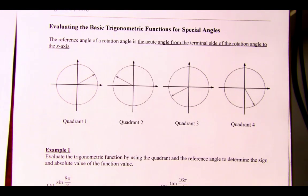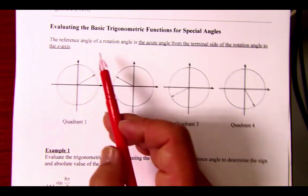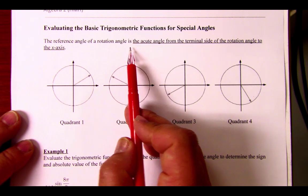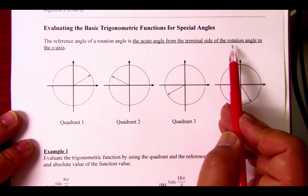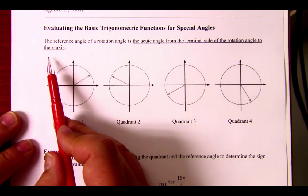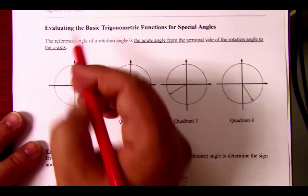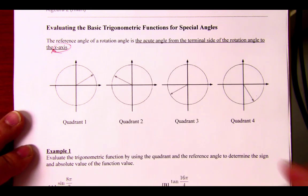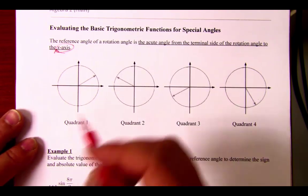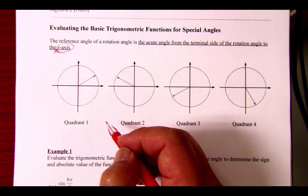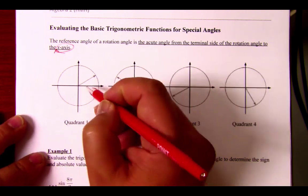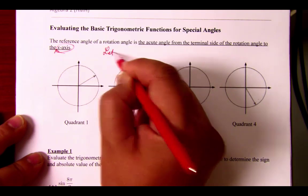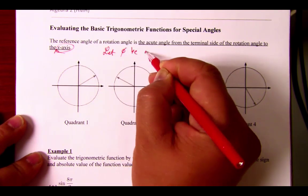Let's move on to the next page. Let's define the reference angle. The reference angle of a rotation angle is the acute angle from the terminal side of the rotational angle to the closest x-axis. In this particular case, let phi be a reference angle and the rotation angle we're going to call theta.